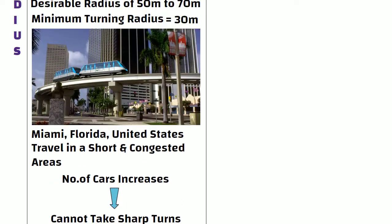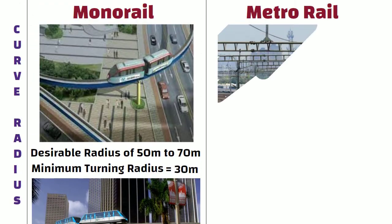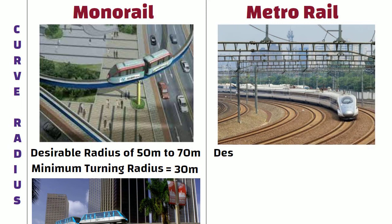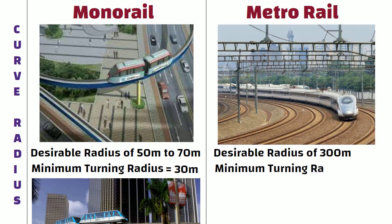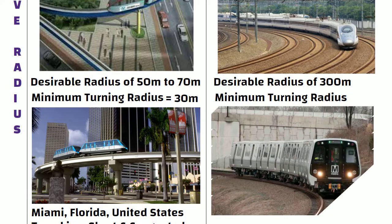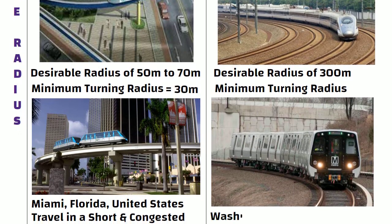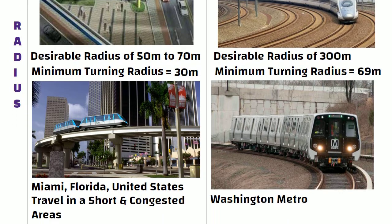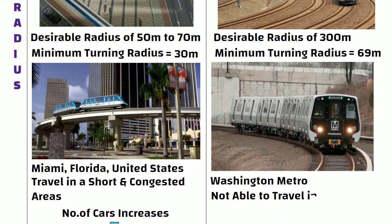On the other hand, metrorail requires a desirable radius of 300 meters, and the minimum turning radius of a metro train constructed in Washington is 69 meters. This is the reason metrorails are not able to travel in overcrowded and busy areas.